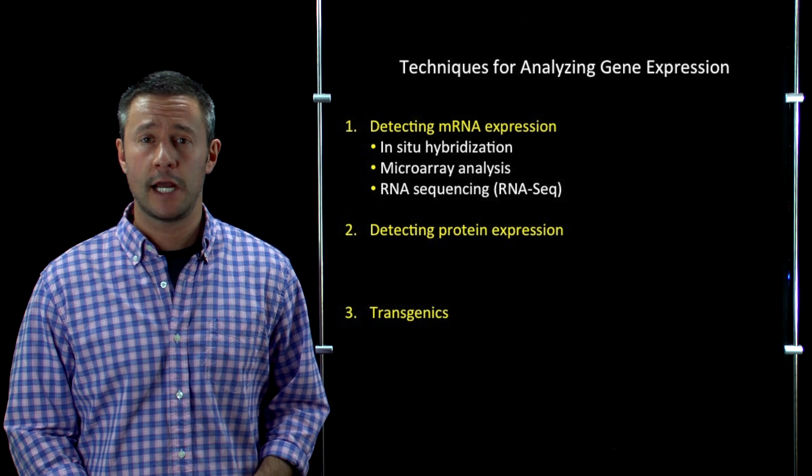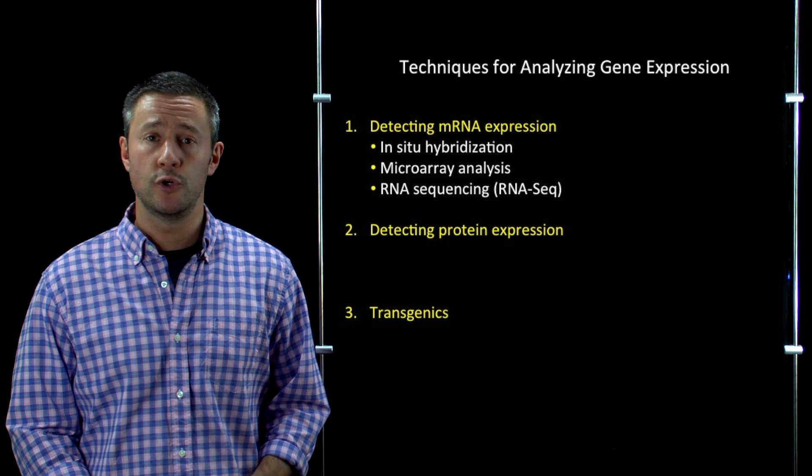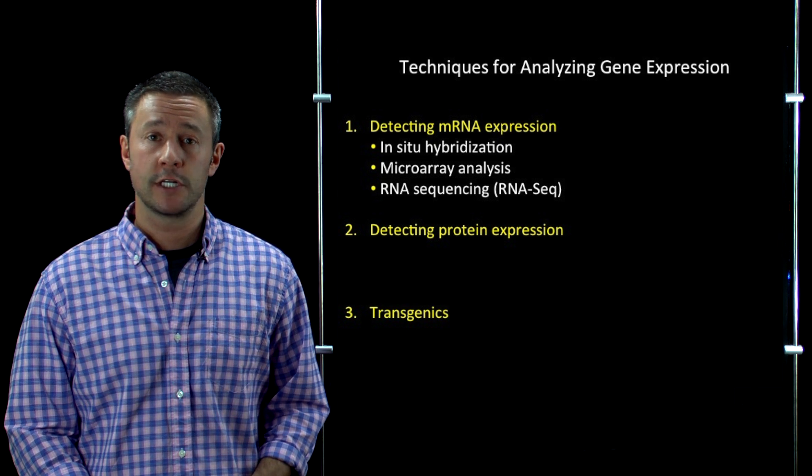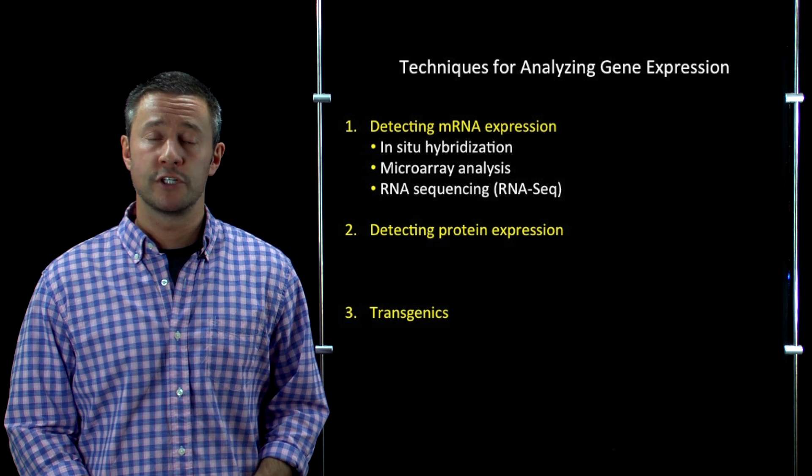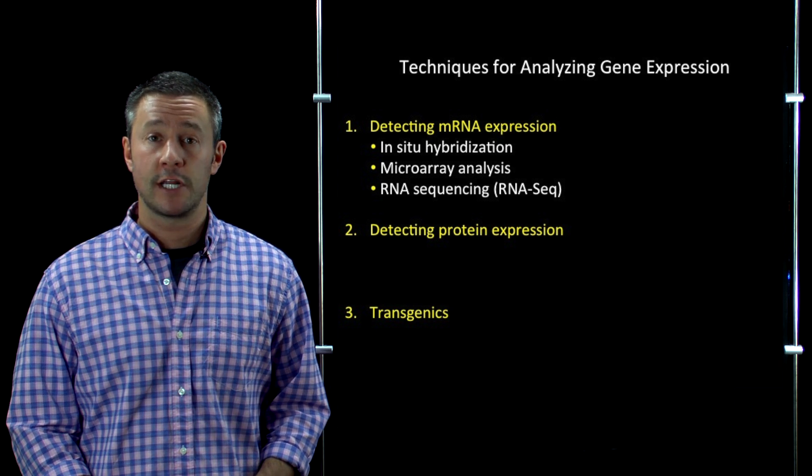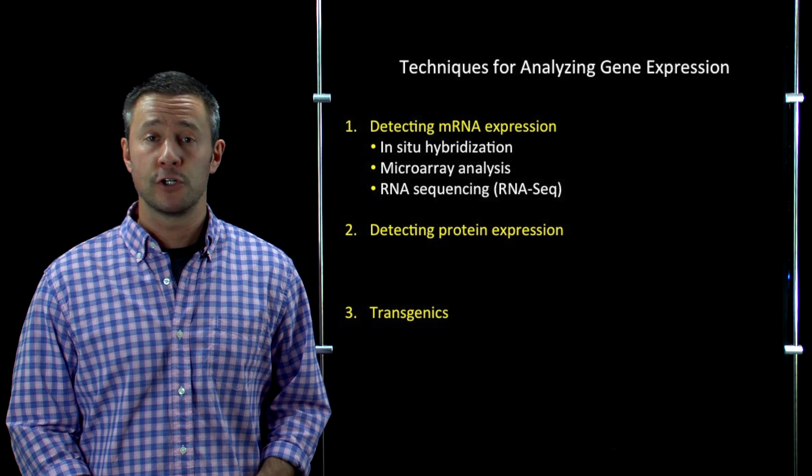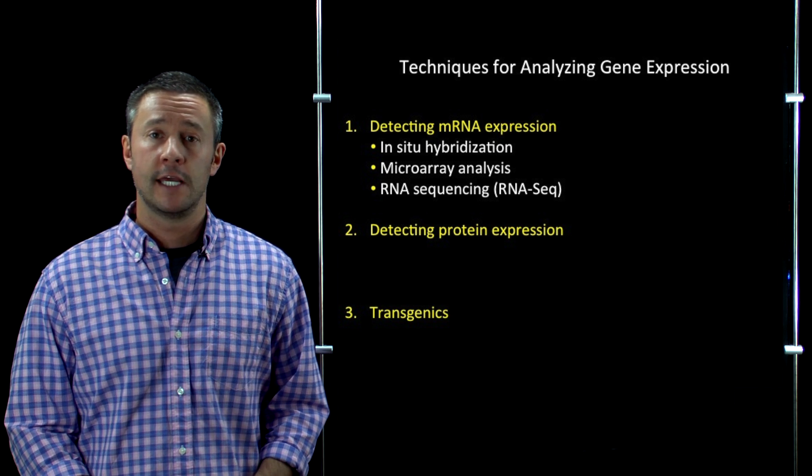So those are some of the key techniques that developmental biologists use to analyze gene expression at the messenger RNA level. But now I want to turn to approaches for analyzing gene expression at the protein level. And the first one in that category is called immunostaining.